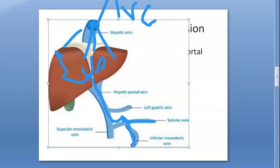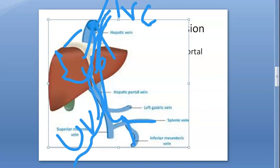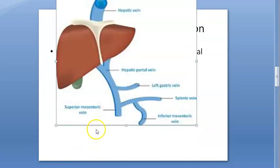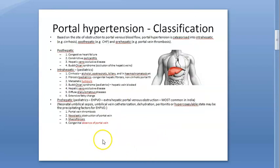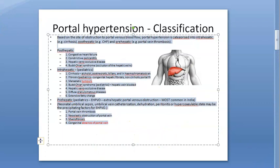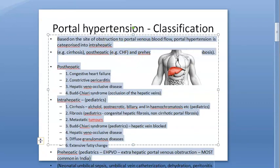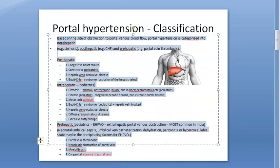In children when they are born, there is an extra umbilical vein that joins this system — the umbilical vein drains into the heart. That is why umbilical vein catheterization in the paediatric population can lead to portal hypertension.